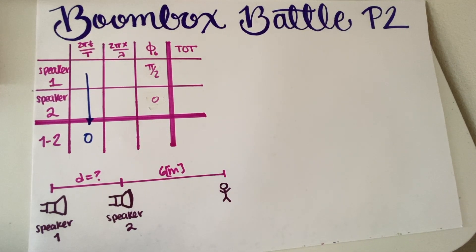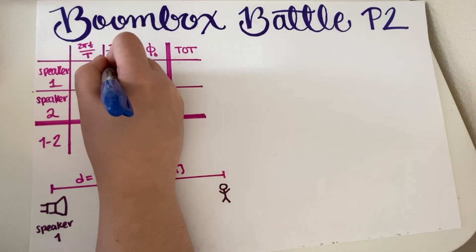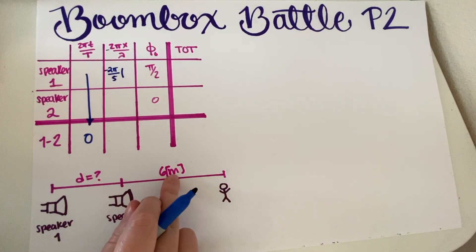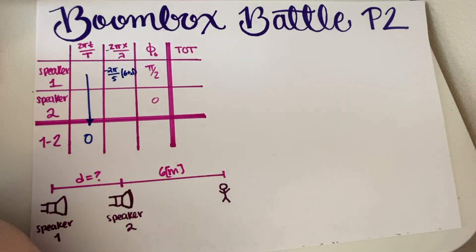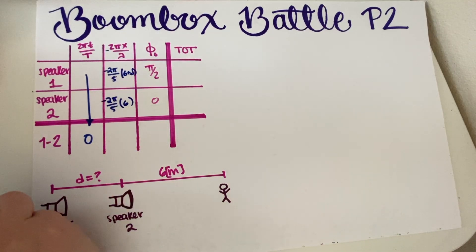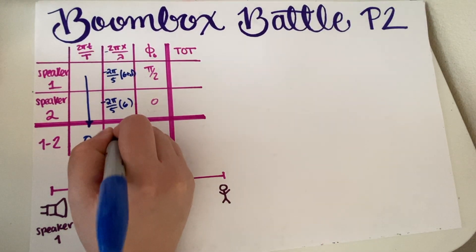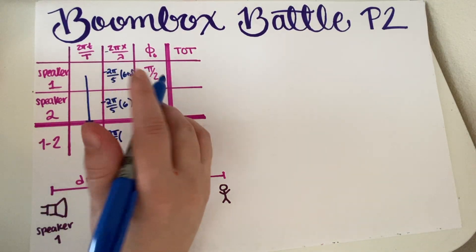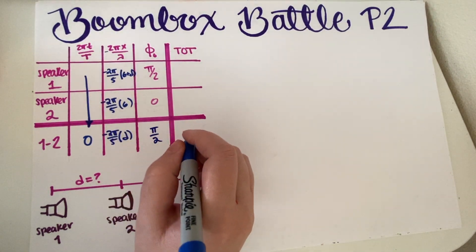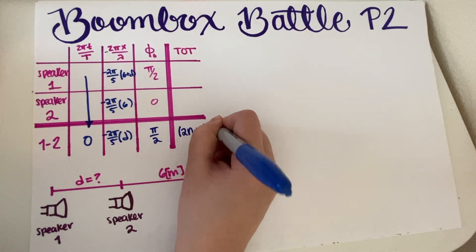Again, the entire frequency/lambda term is zero because frequency and lambda are exactly the same for both speakers. The distance to Speaker 1 is 6 plus d, and lambda is 5, so that term is negative 2π over 5 times (6 + d). The distance to Speaker 2 is just 6 meters. Doing 1 minus 2, the path length difference simplifies to 2π over 5 times d. The phase difference from wiring is (2n + 1) times pi/2, and the person wants no sound, so we set the total equal to (2n + 1)π for destructive interference.